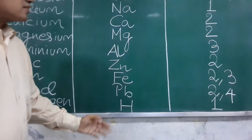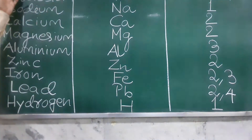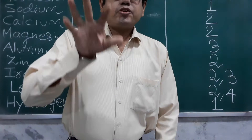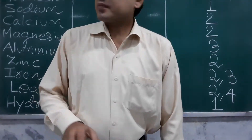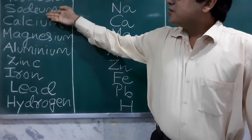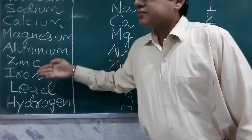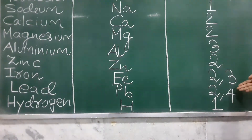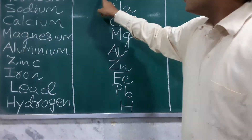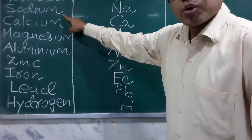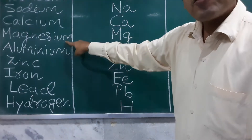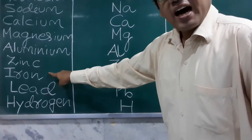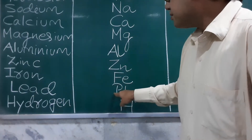As you can see, this is the chart I have prepared. You have to make three columns: in the first column write the names of the elements, in the second column write the symbols, and in the third column write the valencies. For example: potassium is K, sodium is Na, calcium is Ca, magnesium is Mg, aluminium is Al, zinc is Zn, iron is Fe, lead is Pb, hydrogen is H.